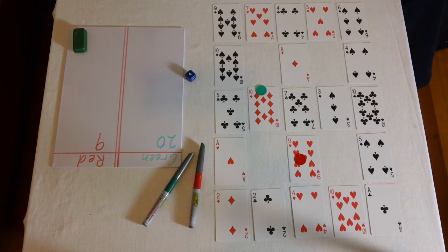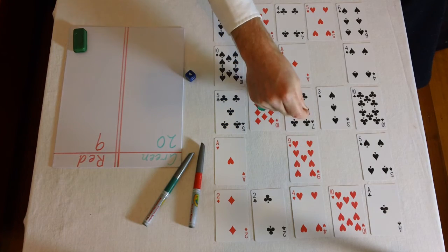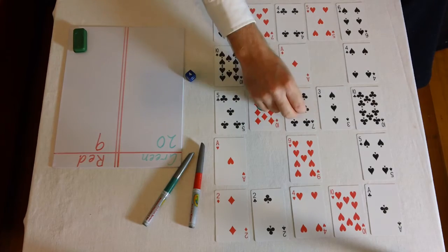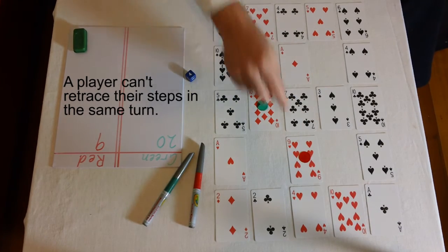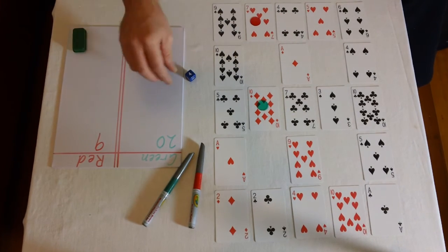Red's turn again, four. Now, when it's your turn, you have to go forwards only. You can't go backwards for example. So I'm going to go one, two, three, four and land on the seven.